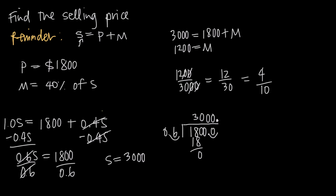So that's how you use the formula — selling price equals purchase price plus markup — to find the selling price of an object. If you have different information about the markup and the selling price, you can find the purchase price, or if you know the purchase price and the selling price, you can find the markup.